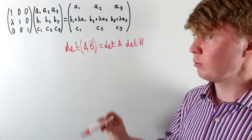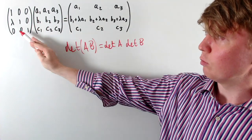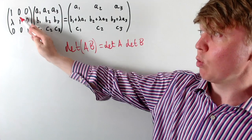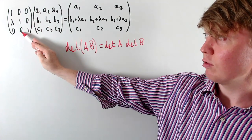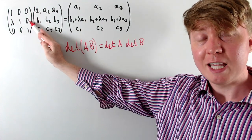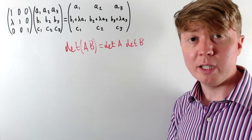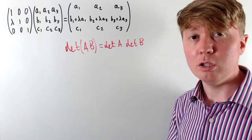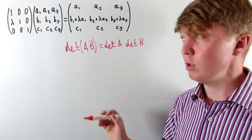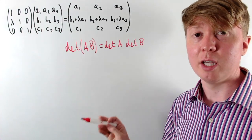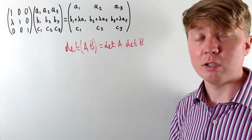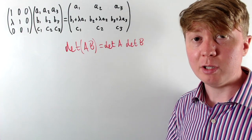We can generalize this: to add a multiple of row 1 into row 3, put a lambda in the appropriate position. We could also add row 2 into row 1, row 2 into row 3, row 3 into row 1, or row 3 into row 2 by placing lambda in the corresponding entry. And we can get the elementary column operation of adding a scalar multiple of one column to another by multiplying by this same type of matrix on the right-hand side of the original matrix instead of the left.